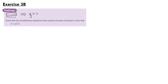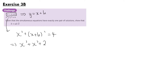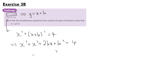We can get y equals x plus k, and putting that into our second equation we get x squared plus (x plus k) squared equals 4. Expanding the brackets: x squared plus x squared plus 2kx plus k squared equals 4, and therefore 2x squared plus 2kx plus k squared minus 4 equals 0.